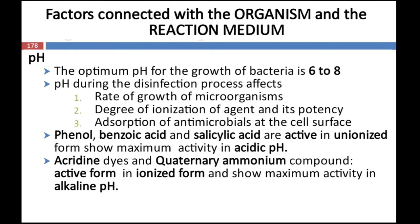The next factor is pH. The optimum pH for the growth of bacteria is 6 to 8. A pH change during the disinfectant process may affect the rate of growth of microorganisms, the degree of ionization of the disinfectant or antimicrobial agents, and adsorption of antimicrobials at the surface. For example, phenol, benzoic acid, and salicylic acid are active in un-ionized form and show maximum activity at acidic pH. Acridine dyes and quaternary ammonium compounds are more active in ionized form and show maximum activity at alkaline pH.